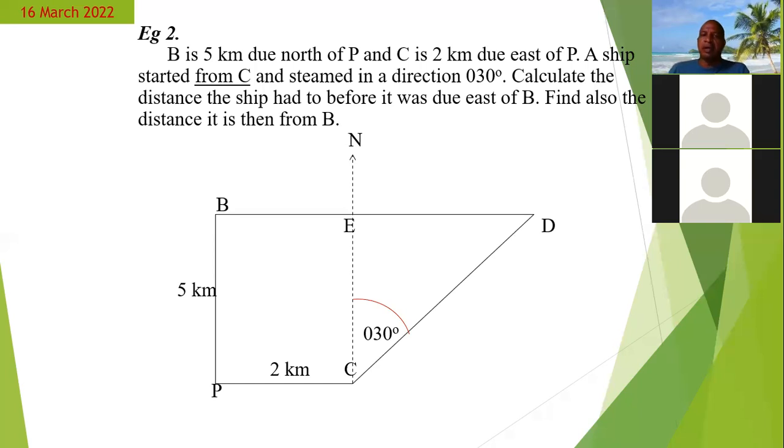Remember, the line BD is east, so that's a horizontal line and our north line is vertical. So basically what we have here is a rectangle. So that line, that height, should also be five.